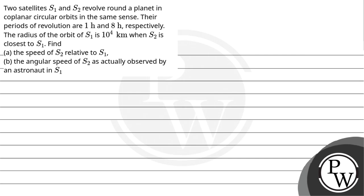Hello, let's read question 2. Satellites S1 and S2 revolve around a planet in coplanar circular orbits in the same sense. Their periods of revolution are 1 hour and 8 hours respectively.